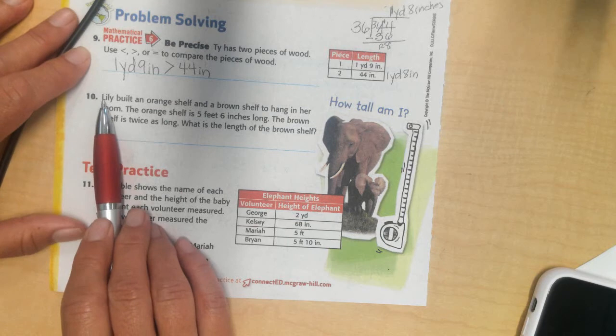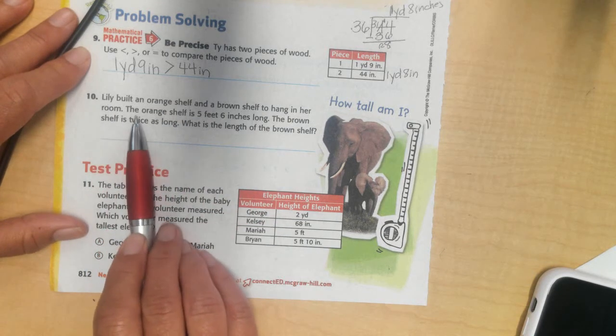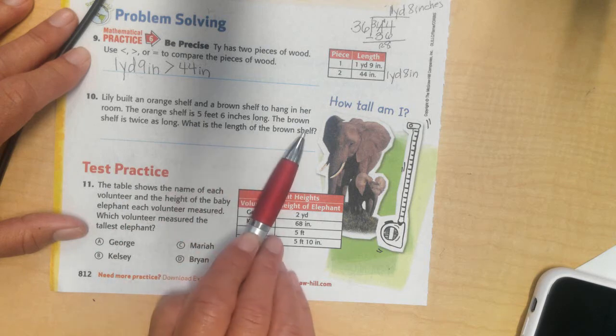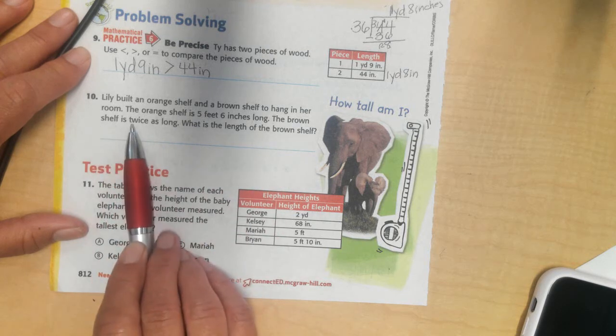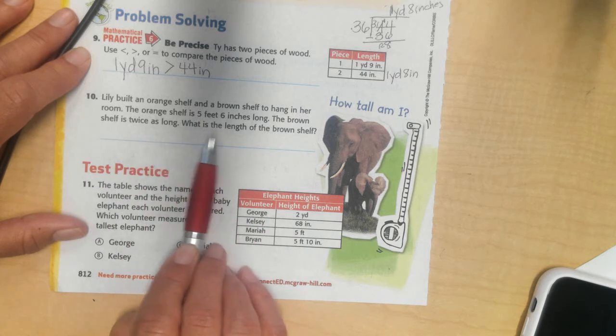Alright, next, I got Lily. Built an orange shelf and a brown shelf to hang in her room. The orange shelf is 5 feet 6 inches long. The brown shelf is twice as long. Two times as long, right? What is the length of the brown shelf?